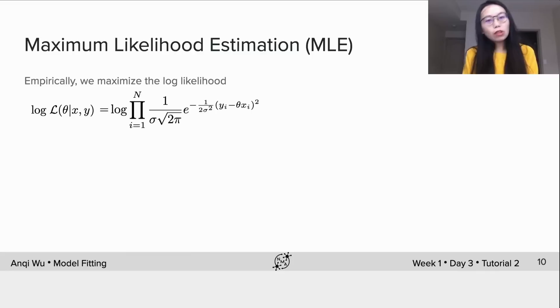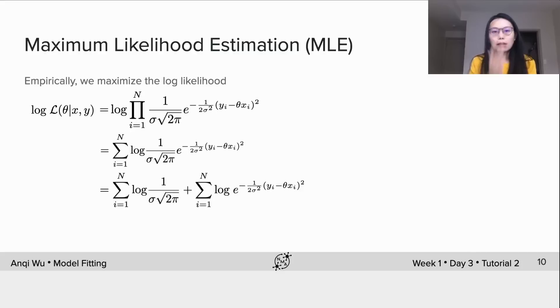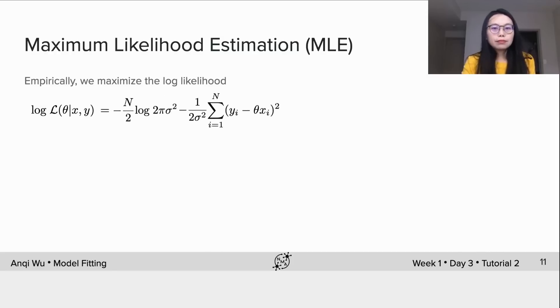Empirically, we maximize the log-likelihood instead of the likelihood function itself. Here we derive the log-likelihood expression for you. We first write down the log-likelihood as the log of the product of density functions for all n data points. And we then move the product to the outside of the logarithm, which becomes a summation. Then we separate the log into two terms. The first term is constant across data points, therefore we can write it as n over 2 multiplying log of 2 pi sigma squared. And in the second term, logarithm is cancelled by exponential, thus the final form is just a sum over quadratics.